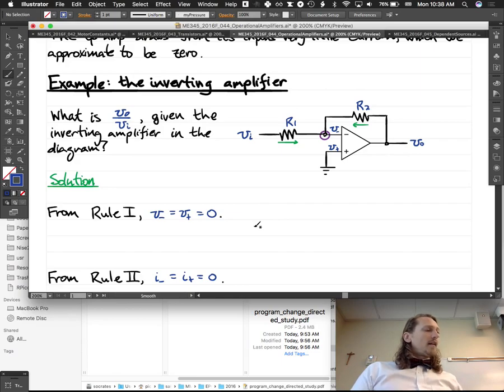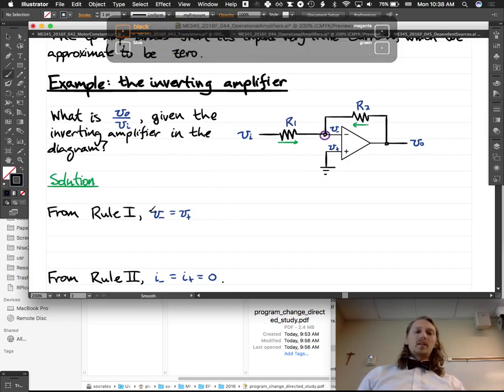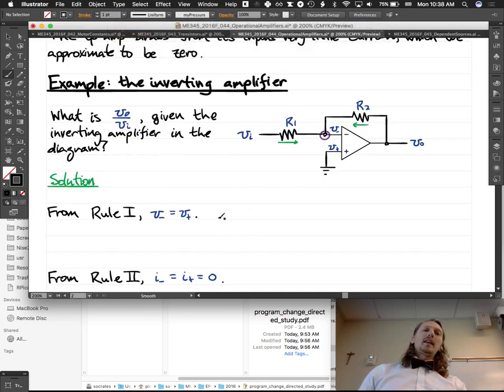So solution. From rule one, we know that V minus is equal to V plus, or approximately so, right? Because we're assuming we have this feedback, so we're assuming that this output voltage is such that we're pretty good at getting these two voltages pretty close. So we're going to say these are approximately equal to each other.